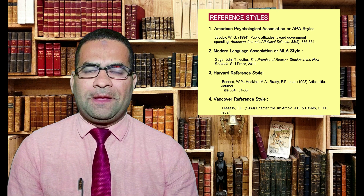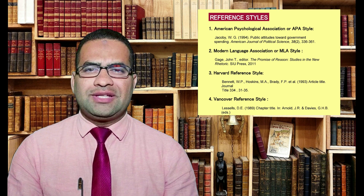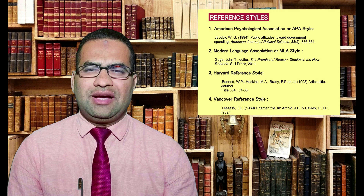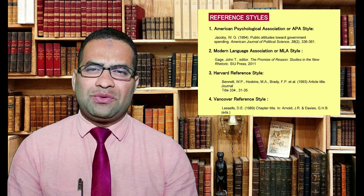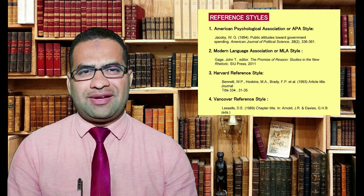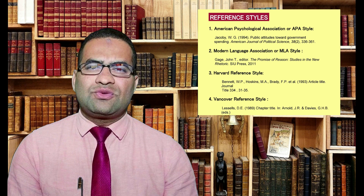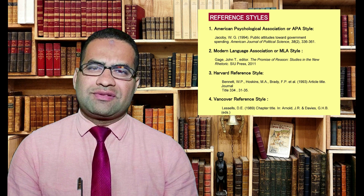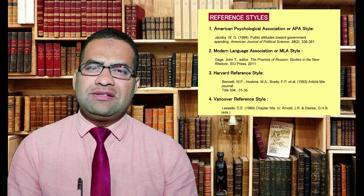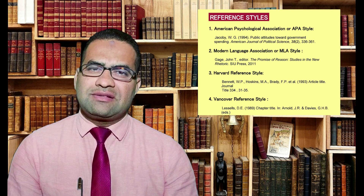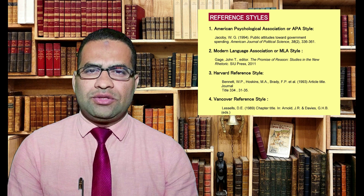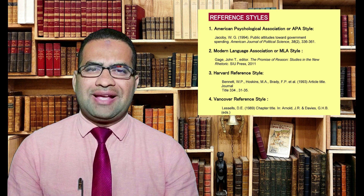If the work has four or more authors, the surname of the first author is cited along with 'et al.' The fourth and last referencing style is the Vancouver reference style. It uses a number series to indicate references, and bibliographies list these in numerical order as they appear in the text.